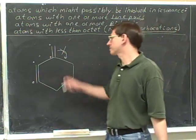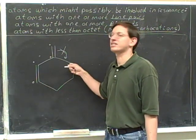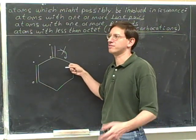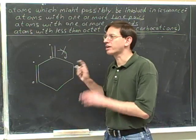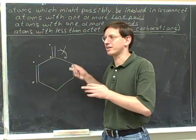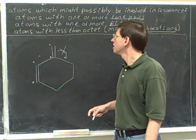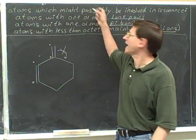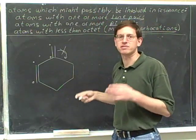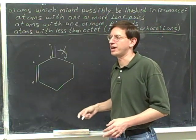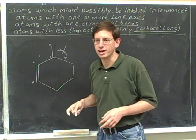Technically, what's wrong here is that in order to form a pi bond, we'd need more than an octet at this carbon. This carbon already has a full octet — it doesn't have room for any more pi bonds. But we're not going to worry about exactly why the arrows are not legal right now. We're just going to say you can't have any arrow that involves an atom that's not a candidate for resonance.